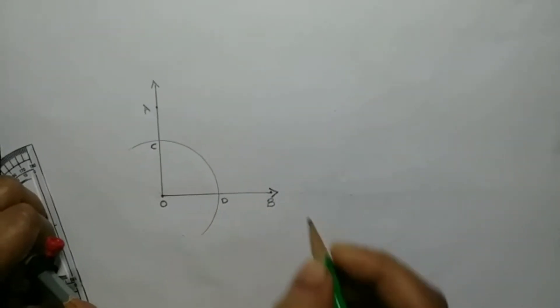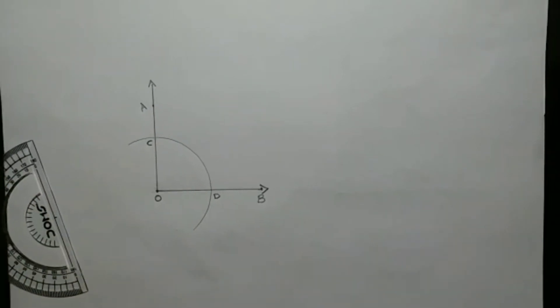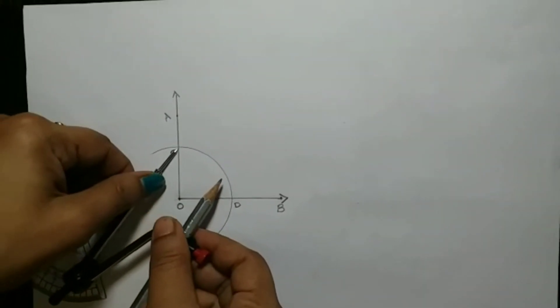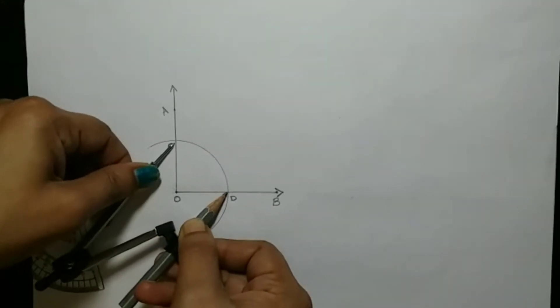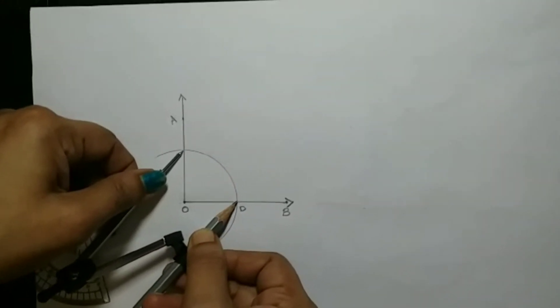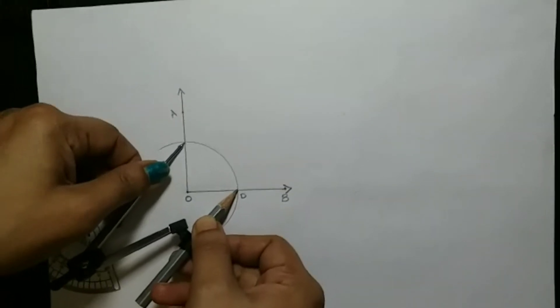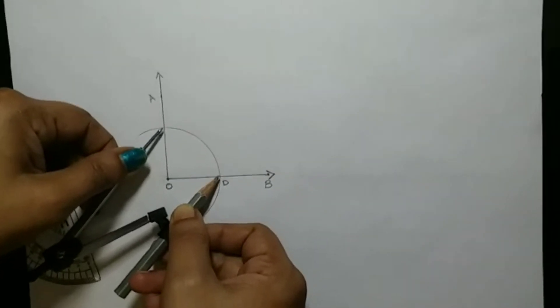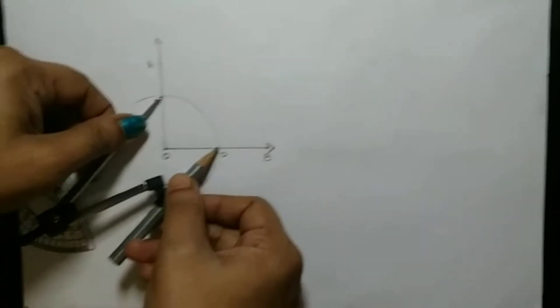Now what I am doing is, I am just measuring the length of C and D. See how I measure, the same way you have to do. My one needle is on C and my pencil tip is on D.